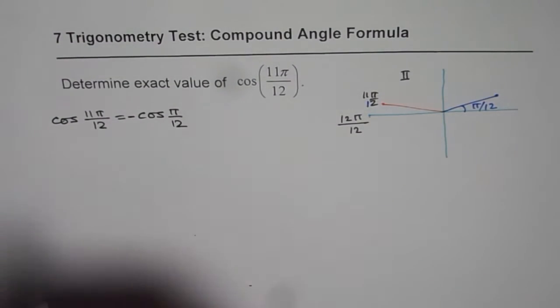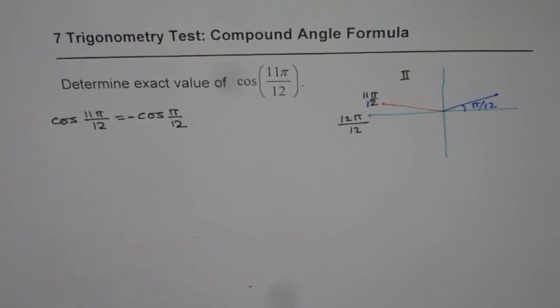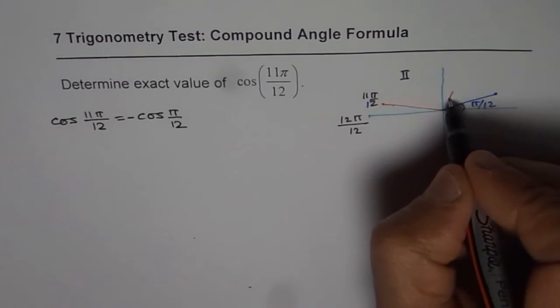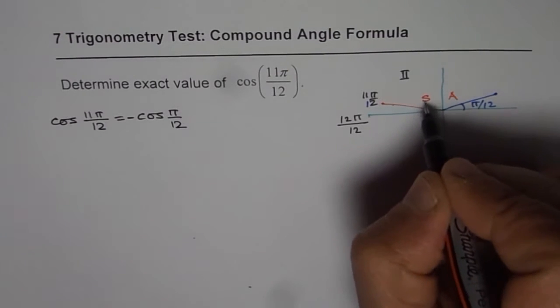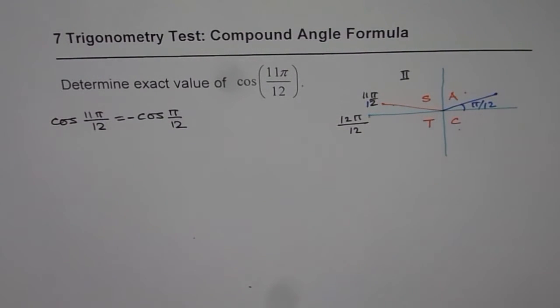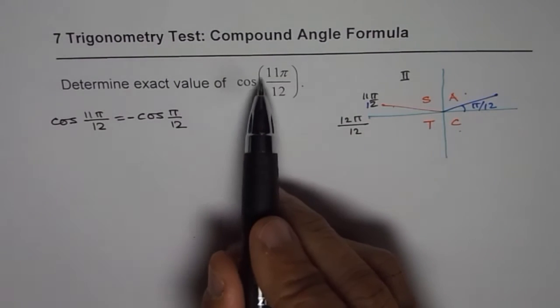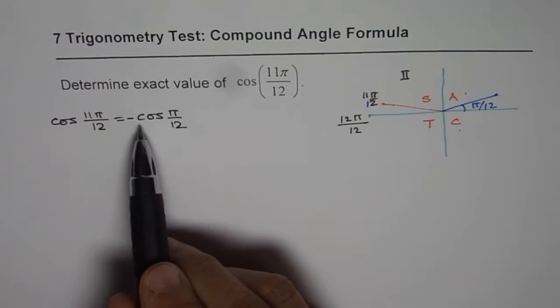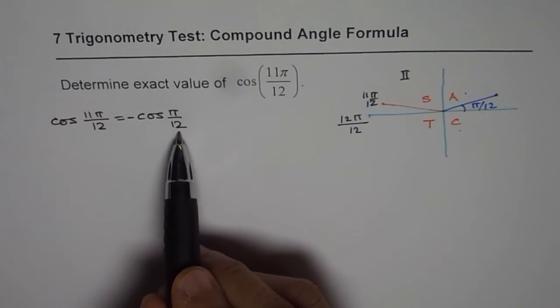Negative sign because in quadrant 2 cos is negative. You know all are positive here. Sine is positive here. Tan in quadrant 3 and cos is positive in 4 or 1. Not in 2 right. Therefore cos 11 pi by 12 can be written as minus cos pi by 12.